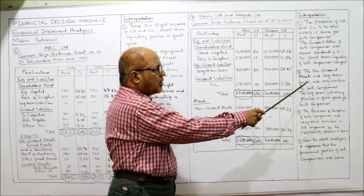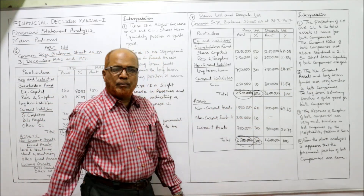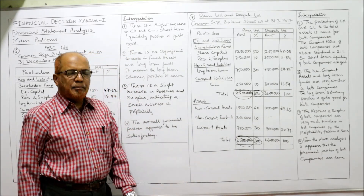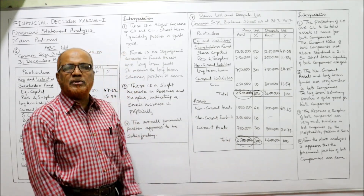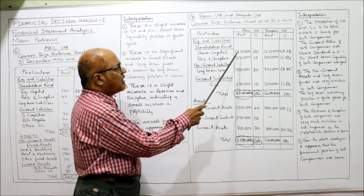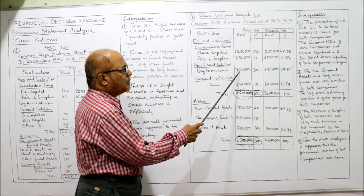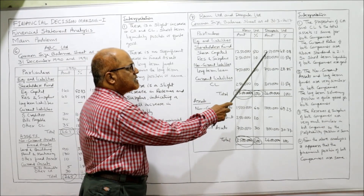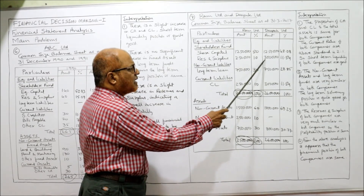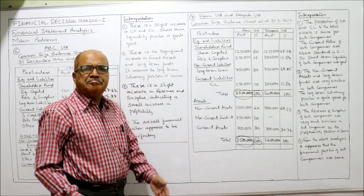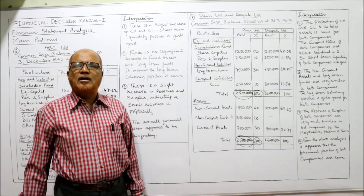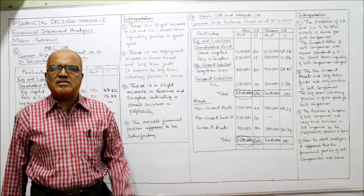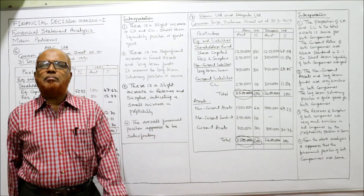Second, the non-current assets and long-term funds are very similar in both companies. Non-current assets: Ram Limited 15 lakh (60%), Deepak Limited 18 lakh (69.23%). Long-term funds — share capital is the same for both companies; reserves and surplus are 2 lakh 50,000 versus 3 lakh; long-term loan is 7 lakh 50,000 for both. Not much difference — long-term funds of both companies are very similar with only a slight difference, and fixed assets also don't show much change.